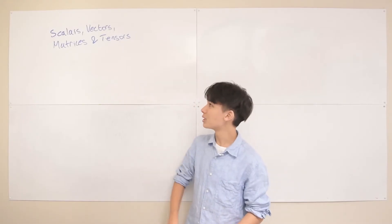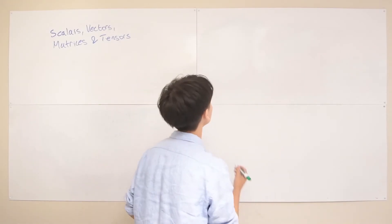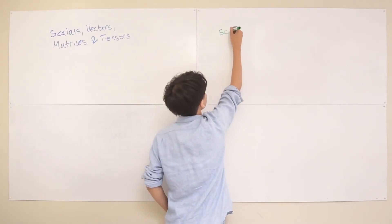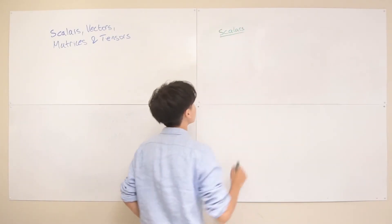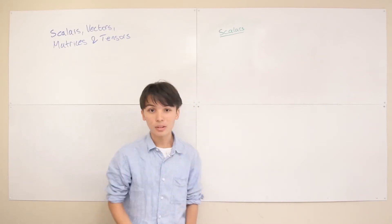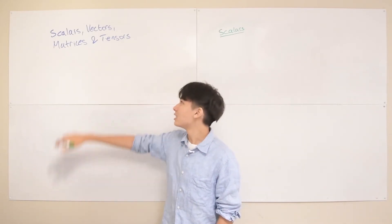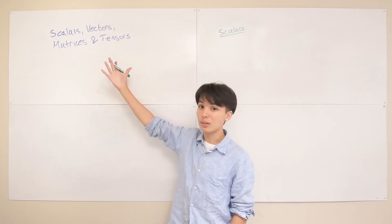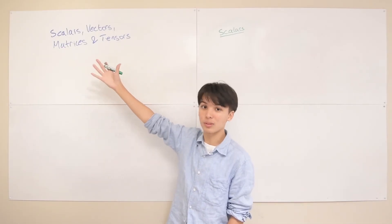Let's start off with the simplest one, which is scalars. Scalars are essentially just single numbers. Whenever you see scalar, read it as a single number. These other three can be thought of as just groups of single numbers, groups of scalars.